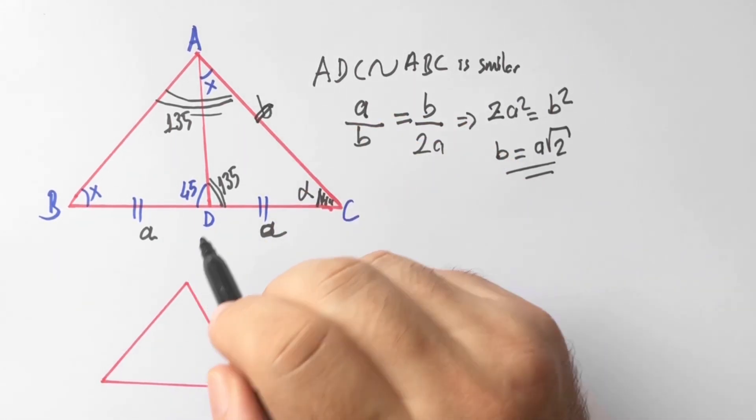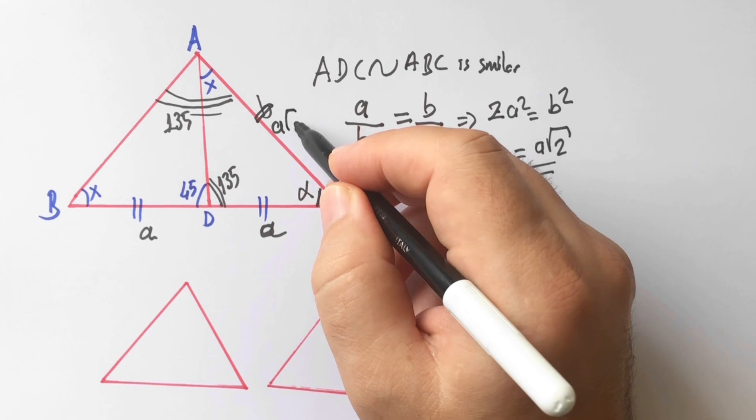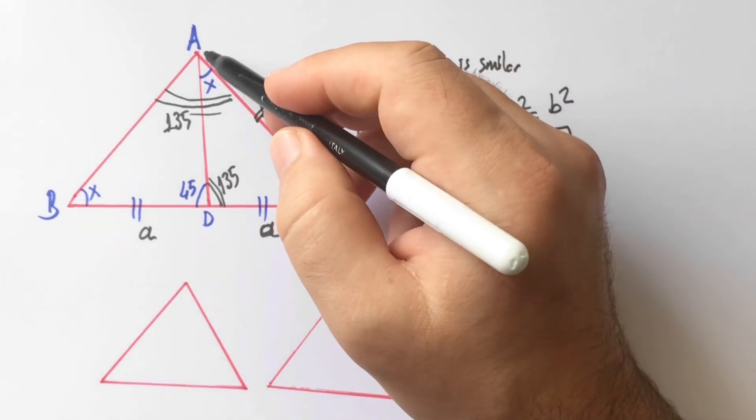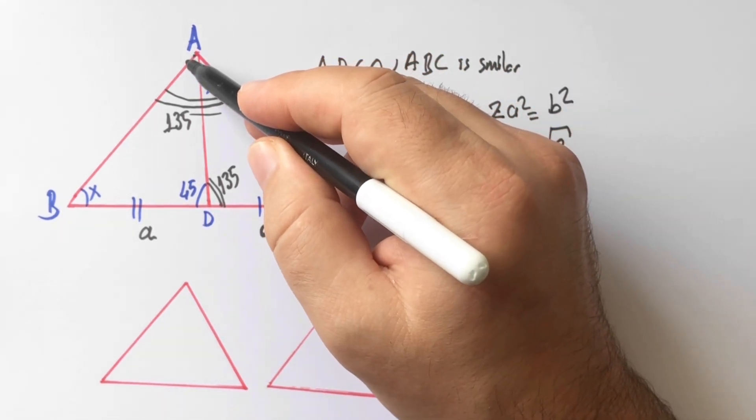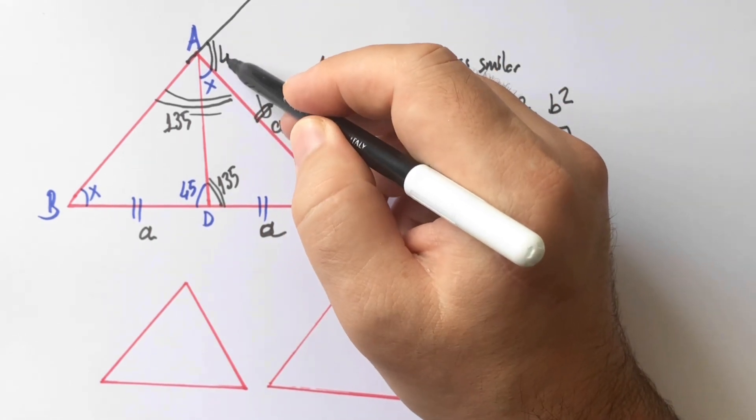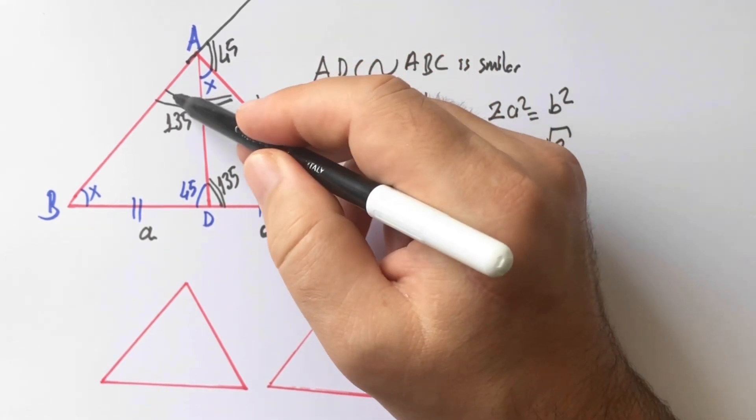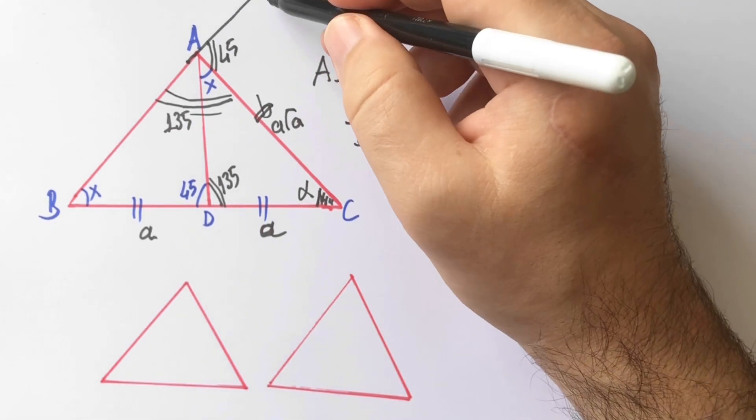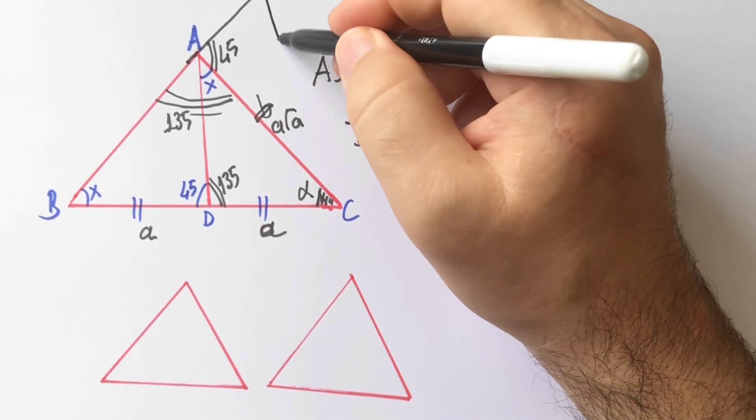So I will write here A root 2. And if we extend here, you know that here is 35 degrees because of this angle. If we draw a perpendicular line like this...